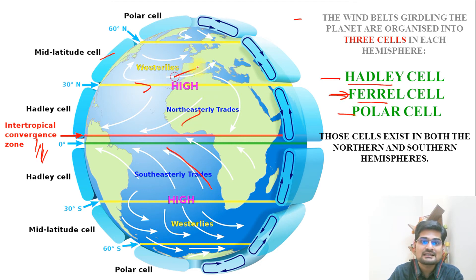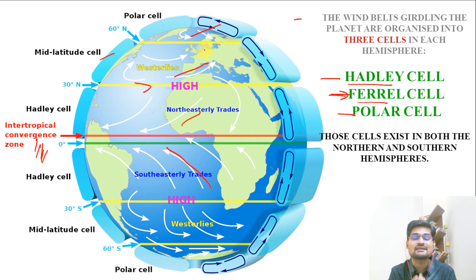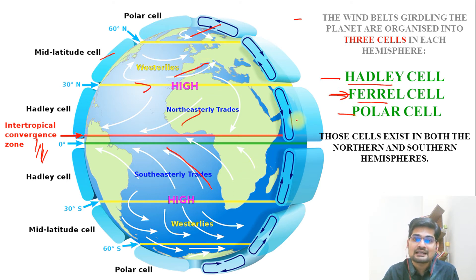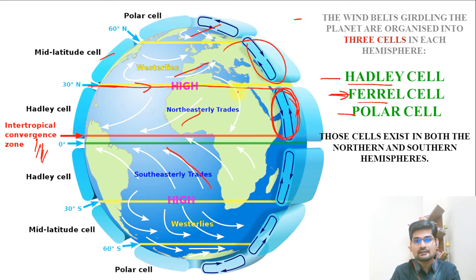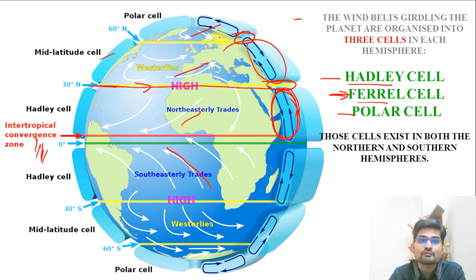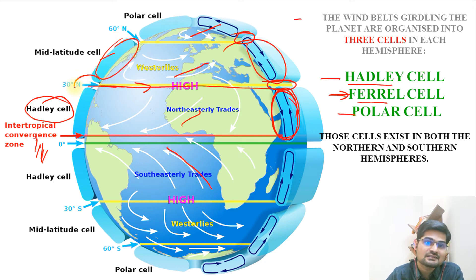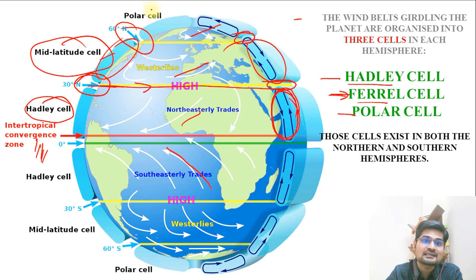Trade winds, westerlies, and polar easterlies are the major winds we will study separately in the wind system. But to understand the cell operation now, there is a cyclic movement of wind within these particular cells. These cells are also connected through zones of mixing — the Hadley cell connects to the mid-latitude cell near 30 degrees, and near 60 degrees the mid-latitude cell connects to the polar cell.